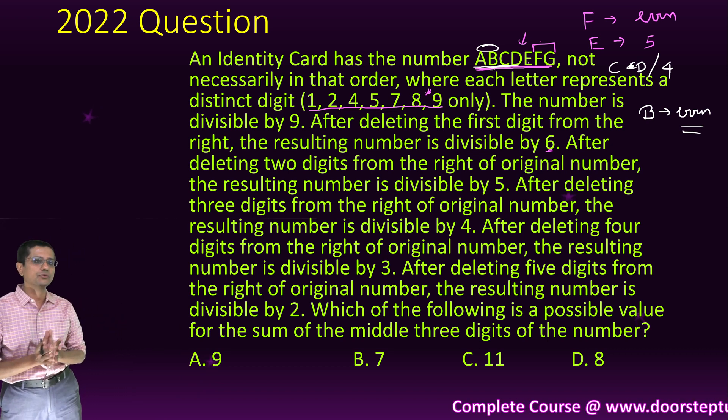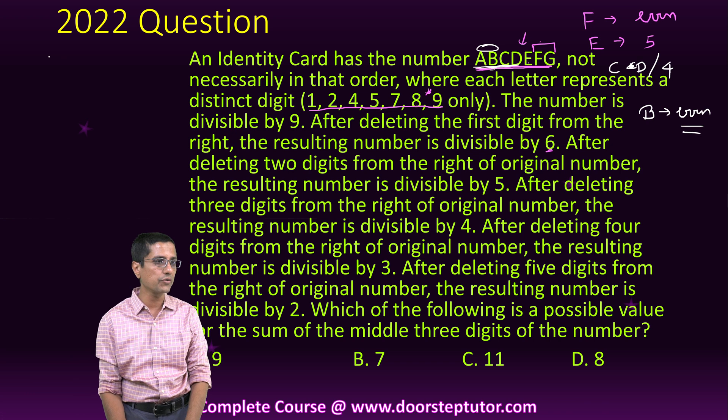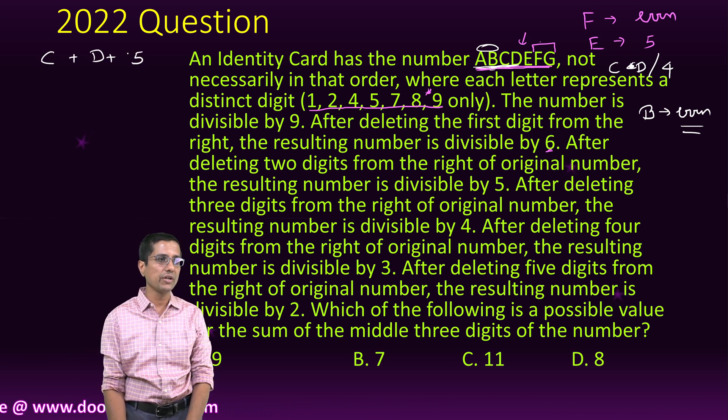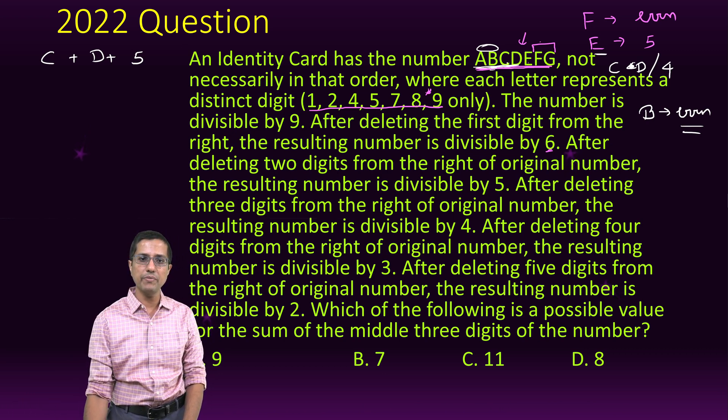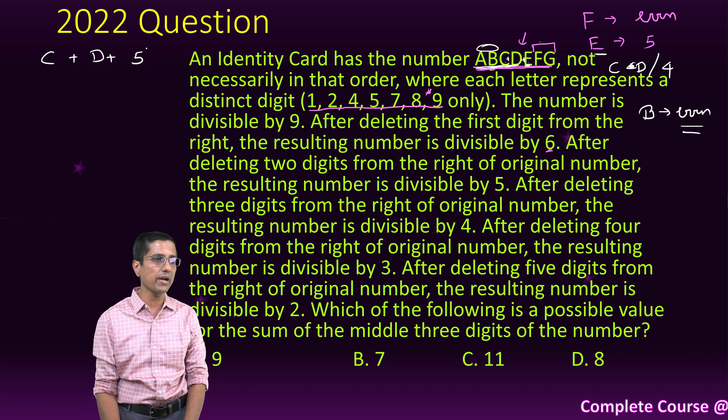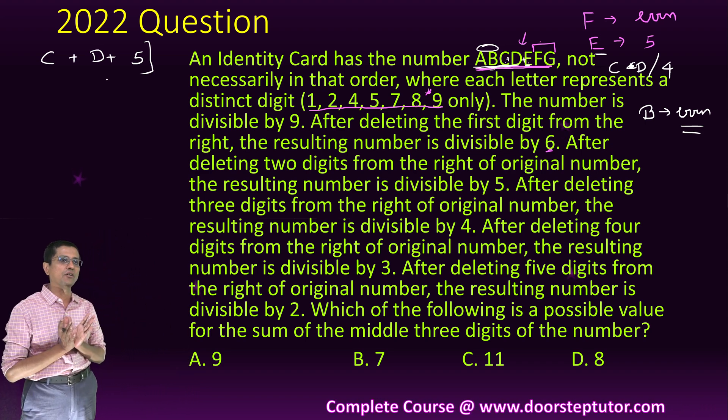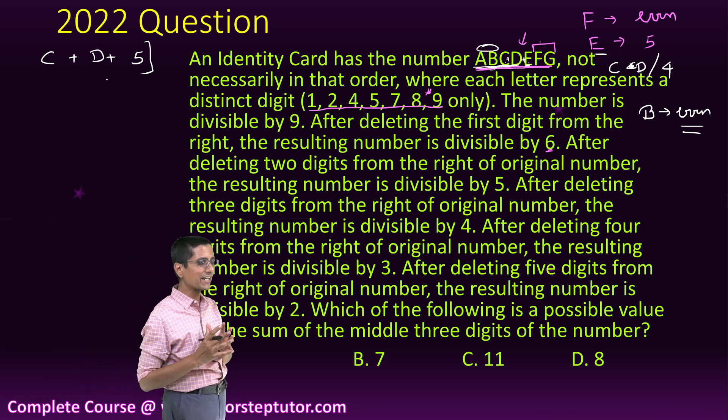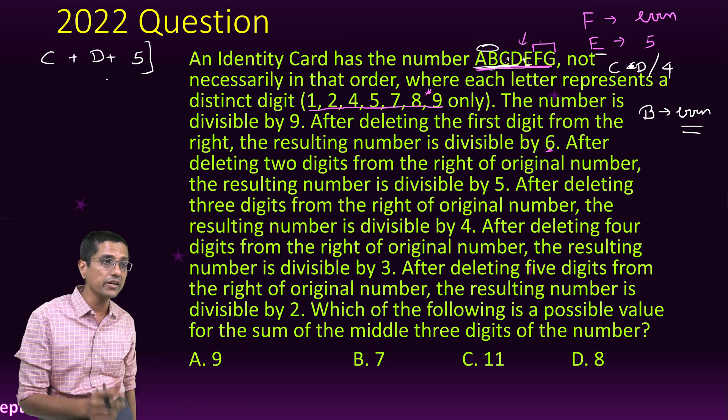With this information, we have been asked to find the sum of the middle three digits. So we have been asked to find C plus D plus E, out of which E is equal to 5. The only thing remaining that we need to find out is the value of C and D. Let us just directly go to that.